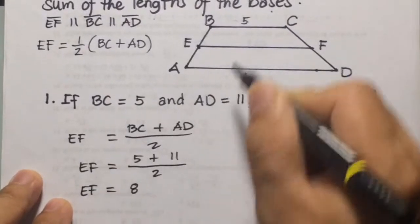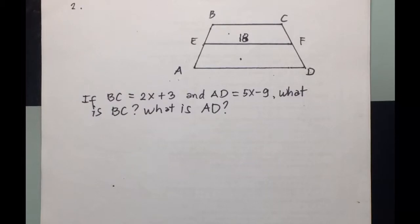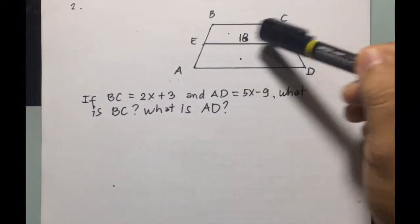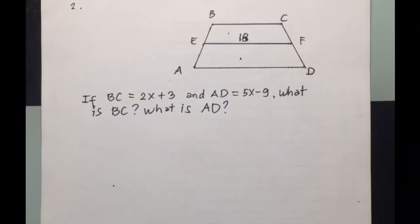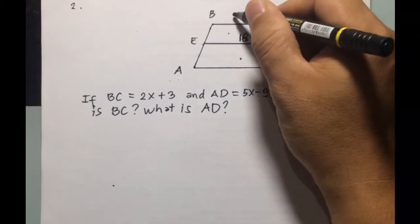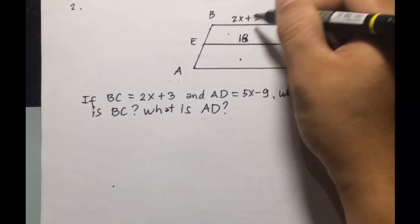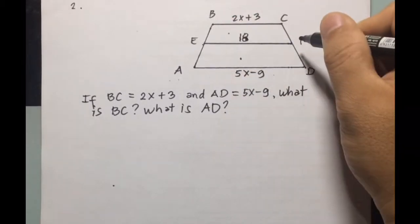So number two, if BC is equal to 2X plus 3 and AD is equal to 5X minus 9, what is BC and what is AD? So this is 2X plus 3 here, AD is 5X minus 9, EF is 18.